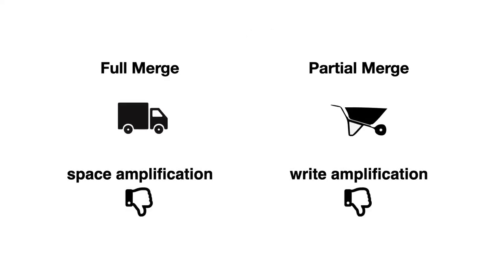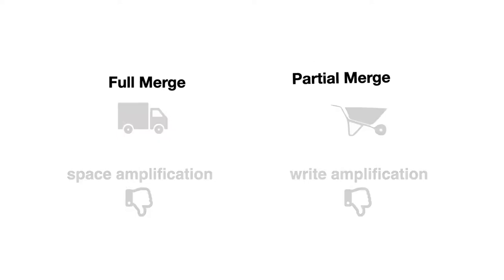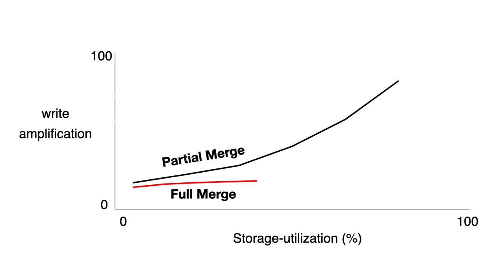So overall, we have two approaches, each problematic in its own way. Full merge exhibits high space amplification, while partial merge exhibits very high write amplification. We summarize the problem in the following figure. It shows us that no existing granulation approach is able to achieve high storage utilization and moderate write amplification at the same time.